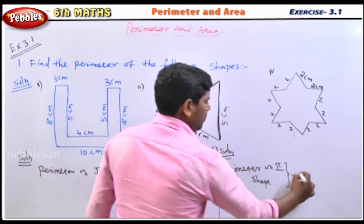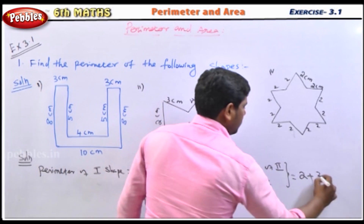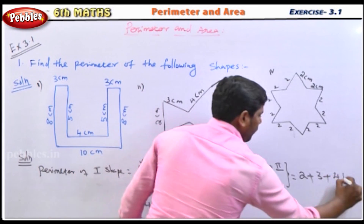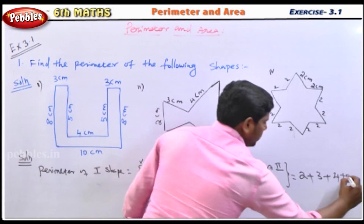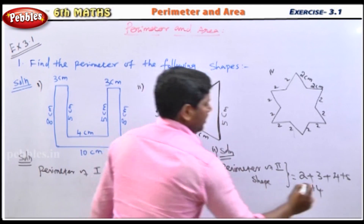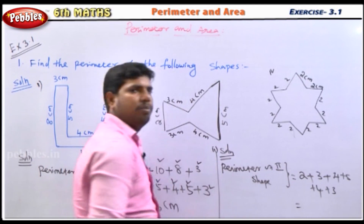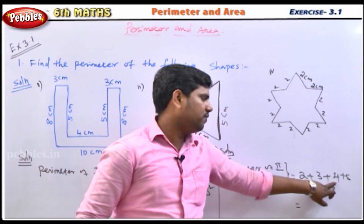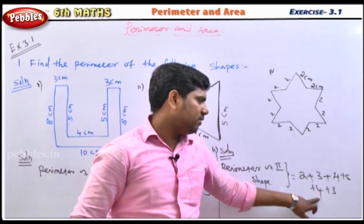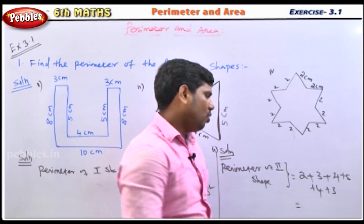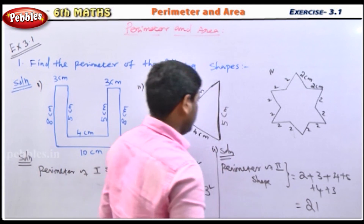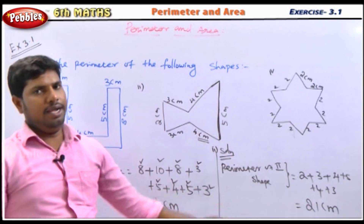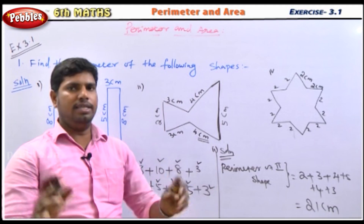For the second shape: 2 plus 3 plus 4 centimeters plus 5 centimeters plus 4 centimeters plus 3 centimeters. So: 2 plus 3 is 5, 5 plus 5 is 10, 10 plus 4 is 14, 14 plus 4 is 18, 18 plus 3 is 21. The perimeter is 21 centimeters. The unit used is centimeters — always match the unit of measurement.